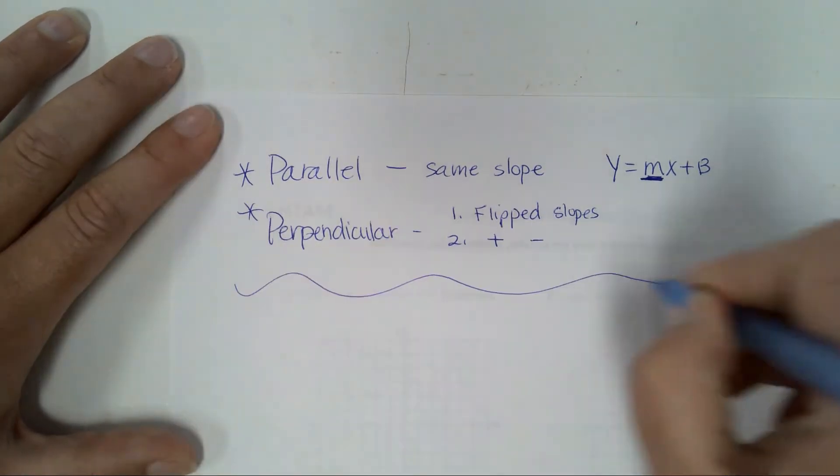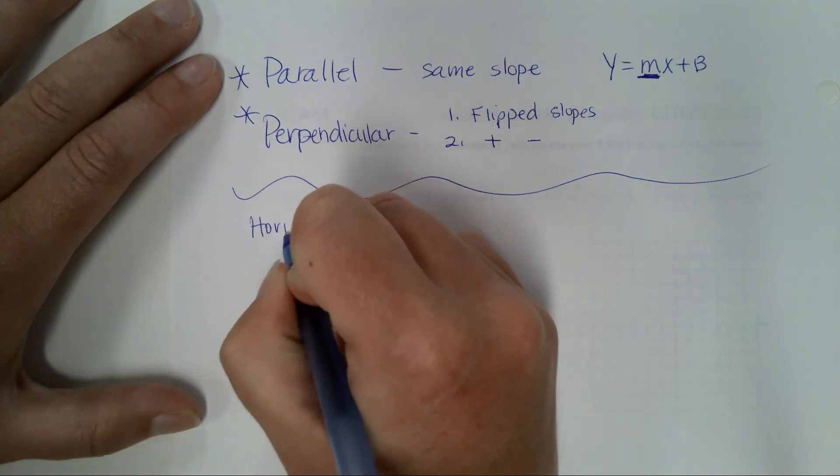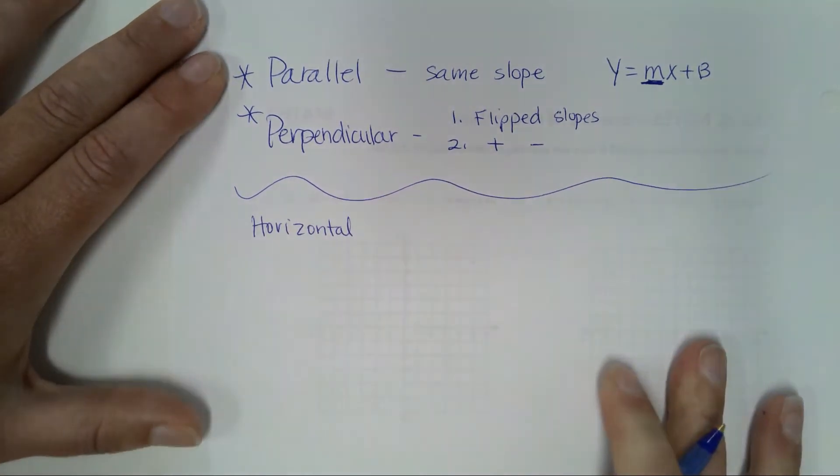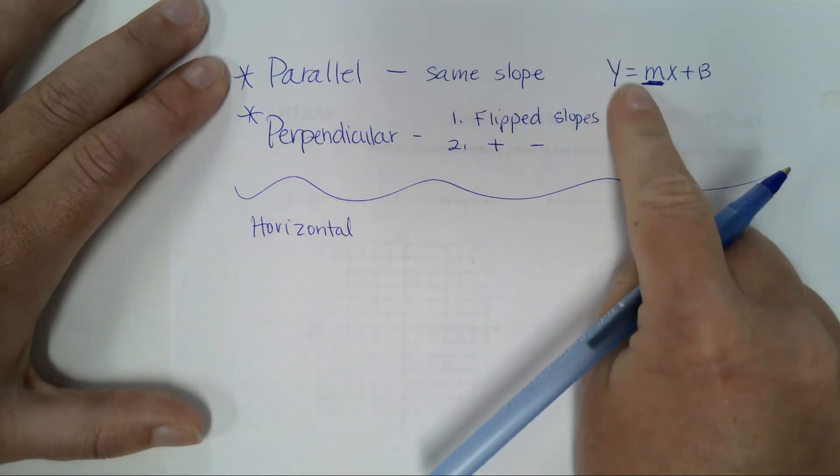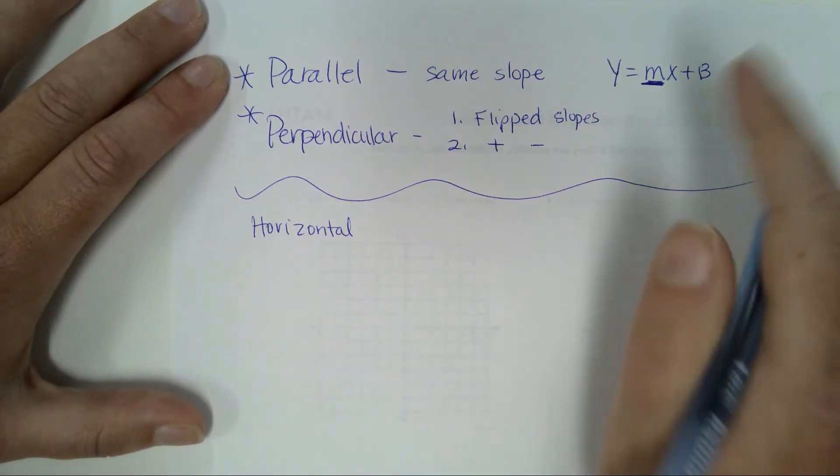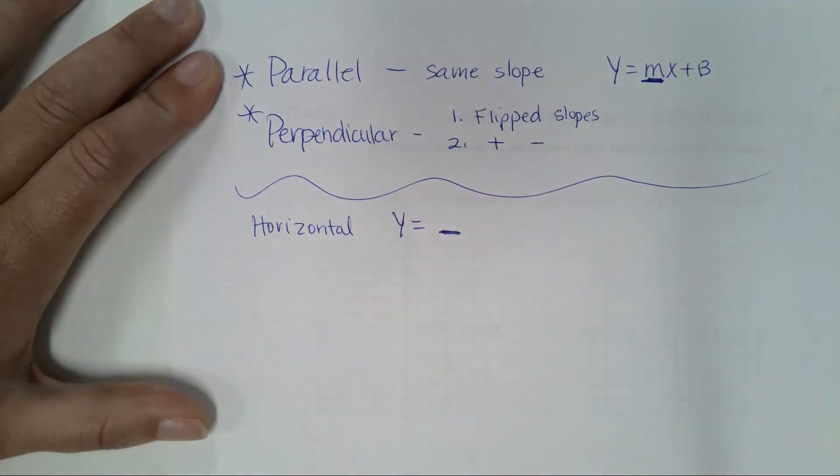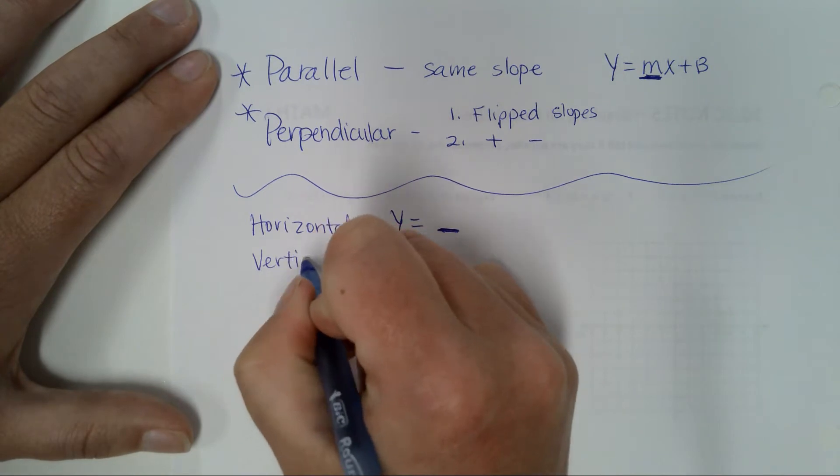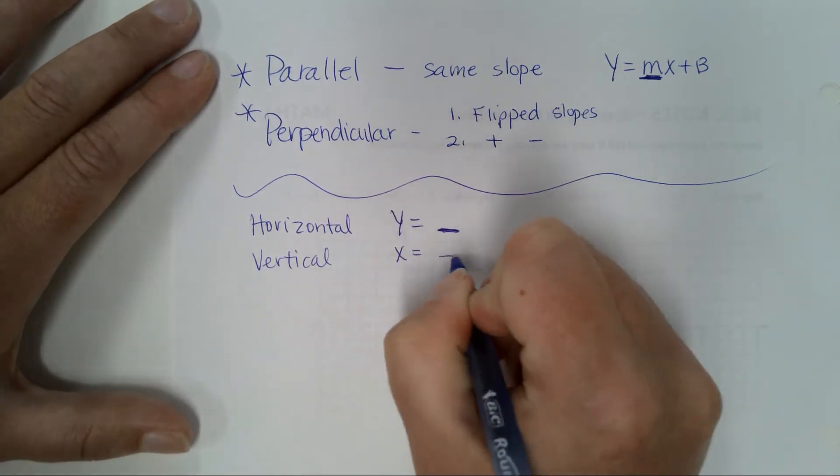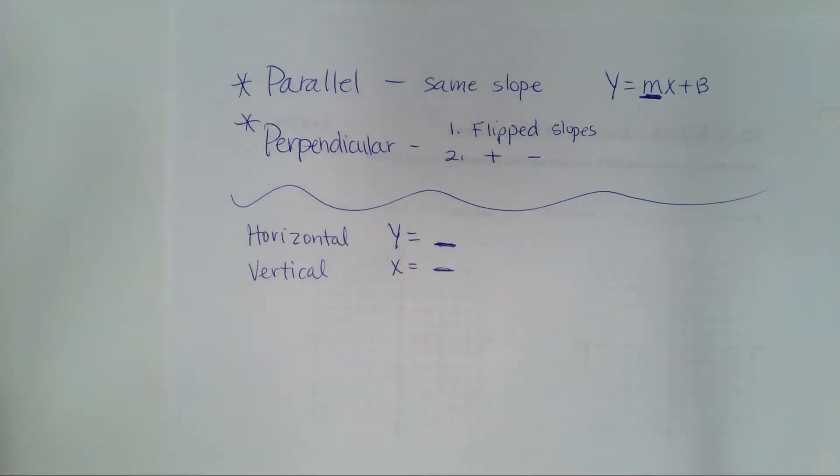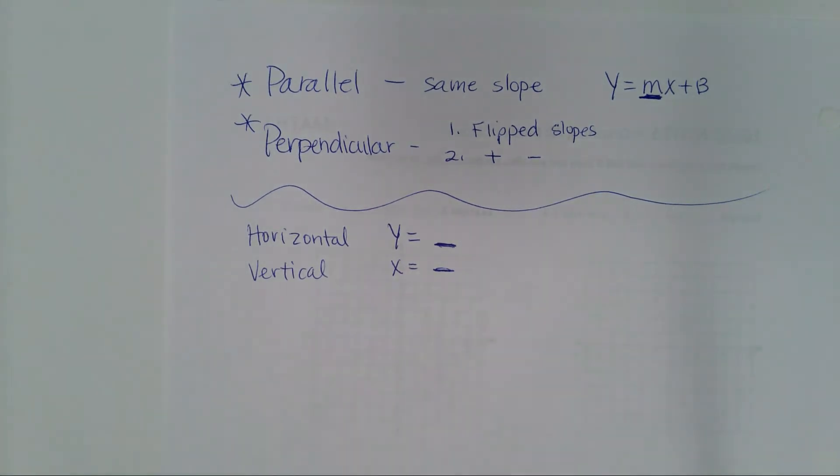One other thing that I want you to put. Horizontal lines will not have this equation right here. Horizontal lines will just be y equals and then a number. Vertical lines will be x equals and then some number. So I want you to have this on the back of this page so that when you guys are doing this on your own, if for some reason you get stumped or you're lost or you're confused, this is really all you need to know. This is our little cheat sheet.